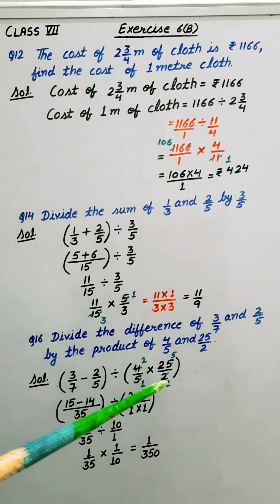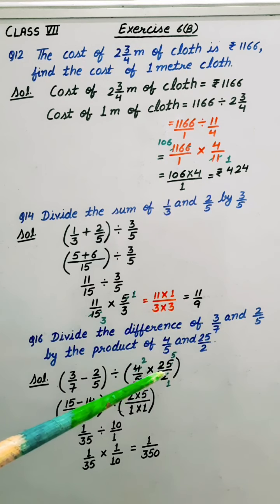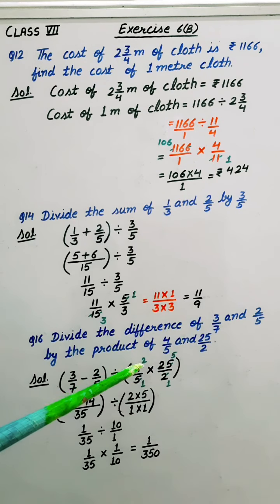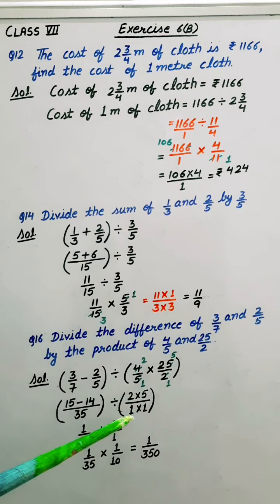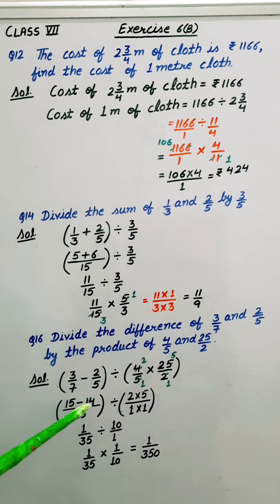Now reducing these numbers 5 into 1 is 5, 5 into 2 is 1, 1 into 2 is 2. So here result is 2 into 5 upon 1 into 1. Here taking LCM 35. So 7 times 5 is 5, 3 times 5 is 15 minus 5 times 7 is 7, 2 times 7 is 14.